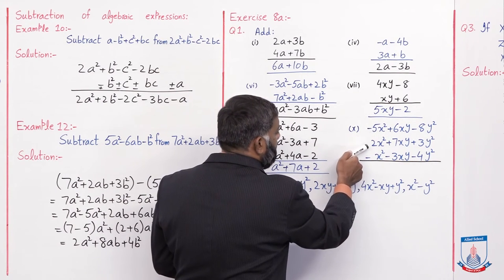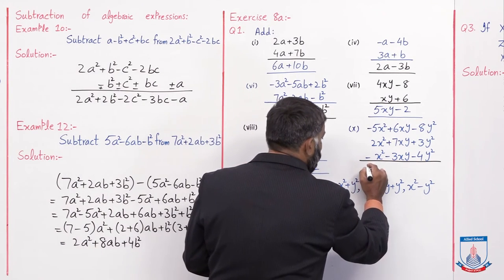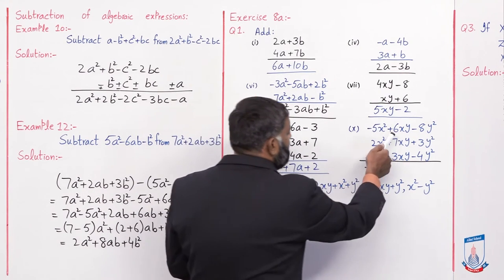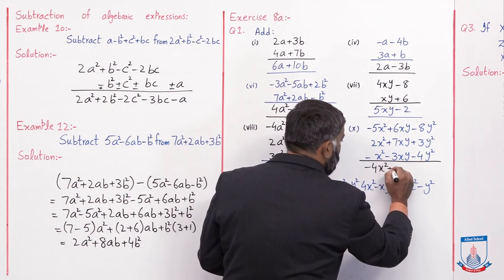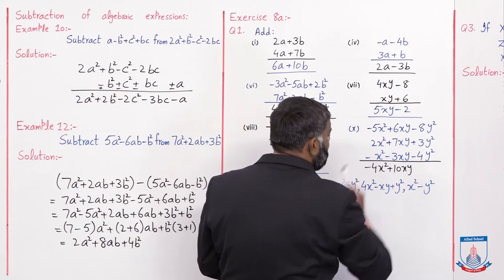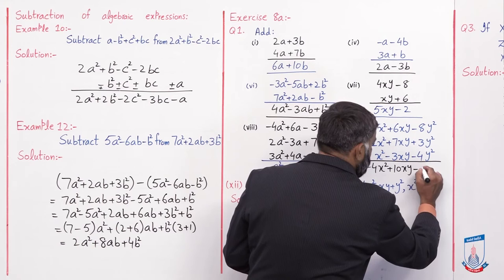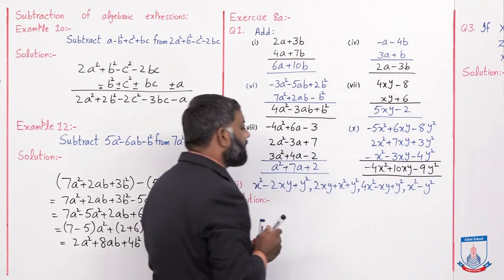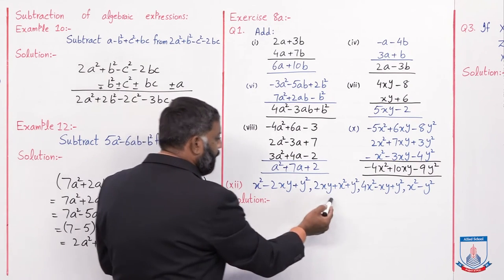Part 10: minus 5x² + 2x² - 3x² - 1x² = minus 4x². Then 6xy + 7xy = 13xy, minus 3xy + 10xy. Minus 8y² + 3y² - 5y² - 4y² = minus 9y². Yeh iska result hoga. Part 12 mein unhone simply 4 expressions likhe hain.